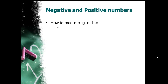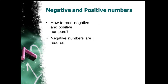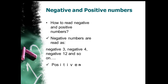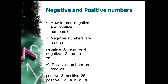Now, negative and positive numbers — how to read them. Negative numbers such as minus 3, minus 2 are read as negative 3, negative 4, negative 12, negative 24, and so on. When I come to positive numbers, I read them as positive 8, positive 25, positive 2, positive 50, and so on.